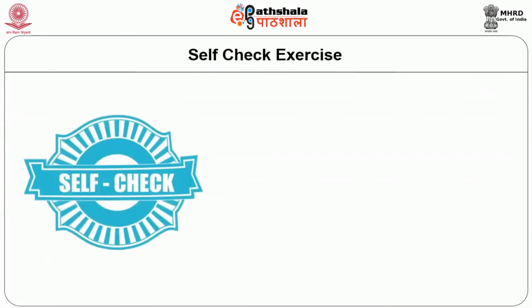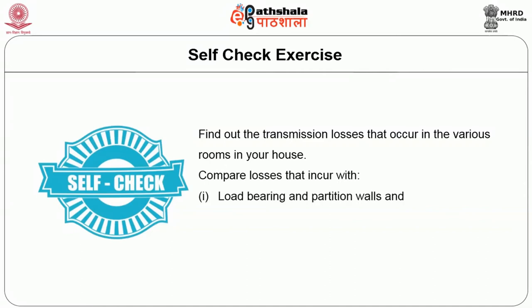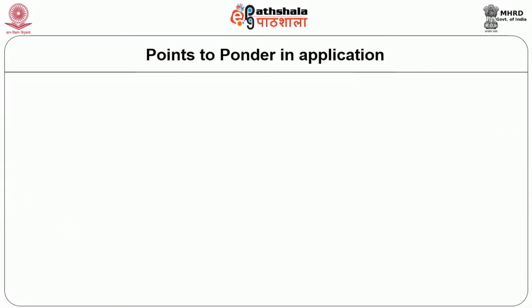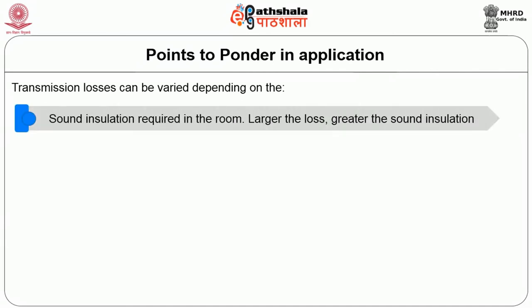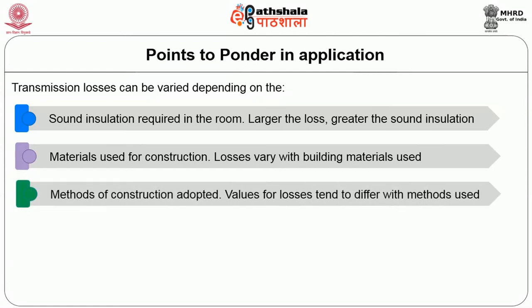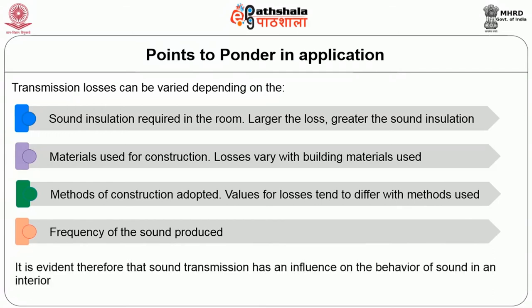Please try a self-check exercise. Find out the transmission losses that occur in the various rooms in your house. Compare losses that incur with load-bearing and partition walls, and various materials used for construction, which may again show differences. When designing an interior, these major aspects have to be borne in mind. Transmission losses can be varied depending on the sound insulation required in the room — larger the loss, greater the sound insulation. Materials used for construction, methods of construction adopted, and values for losses all tend to differ. It is evident therefore that sound transmission has an influence on the behavior of sound in an interior.